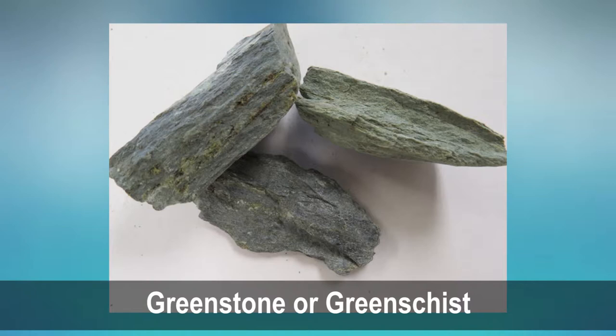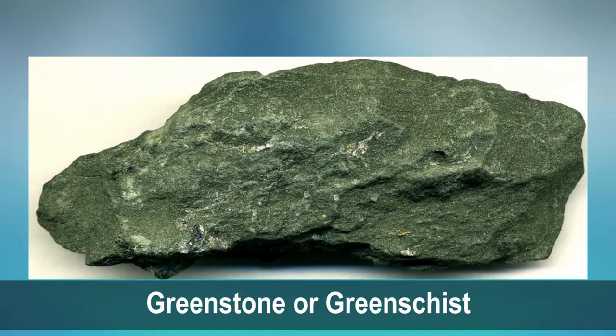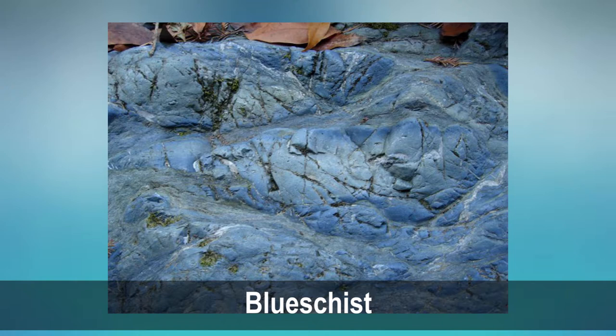Greenschist or greenstone are green-colored low-grade metamorphic rocks dominated by the presence of chlorite, actinolite, and epidote minerals. They may show schistose or non-schistose textures. These rocks form mainly from metamorphism of basaltic igneous parent rocks and are marked by the presence of chlorite mica, which gives greenschist its characteristic green color. Blueschist is a metamorphosed mafic rock containing large quantities of glaucophane (blue amphibole) and has a pronounced schistosity.